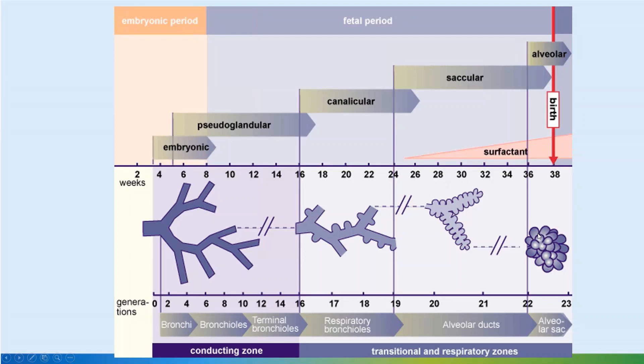The full saccular phase is only formed at 36 weeks when the alveoli develop the typical grape-like appearance. The alveolar phase is from 36 weeks onwards. The lung is relatively poorly developed even at the 24-week stage.